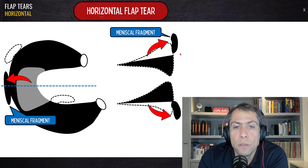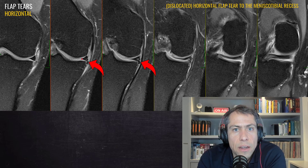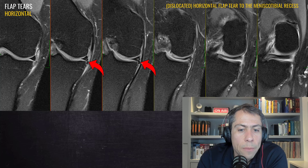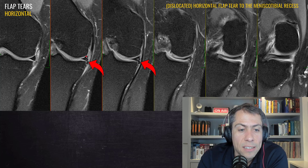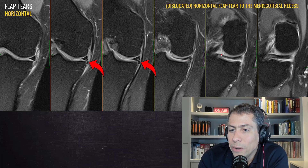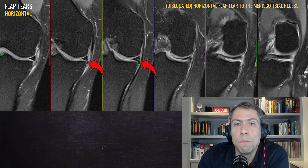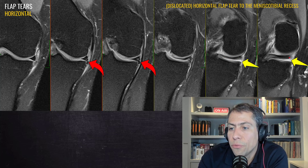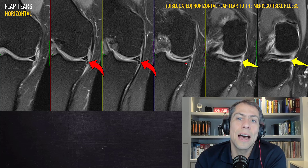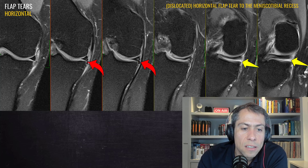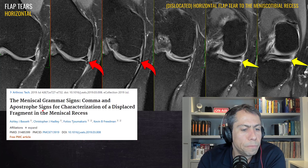Here is our first example of a dislocated horizontal flap tear. We can see the meniscal fragment and the flap. The meniscus appears triangular in the anterior body because the tear is located at the posterior horn of the middle meniscus. Here we can see the superior leaf of the posterior horn, but the inferior leaf is missing — we can infer it was a horizontal tear. This is the meniscal fragment displaced in the meniscal tibial recess — a comma sign.